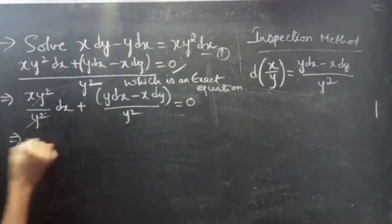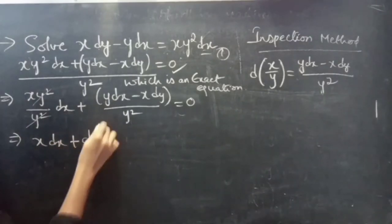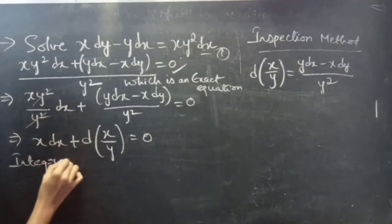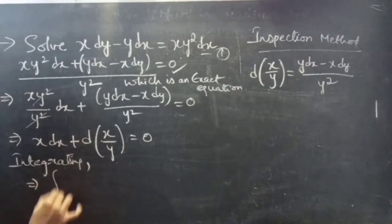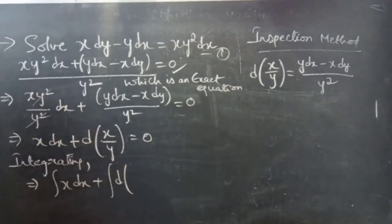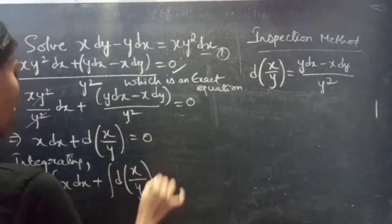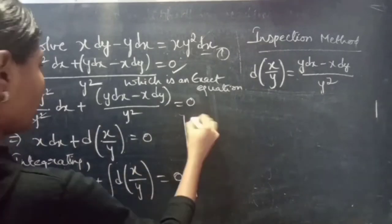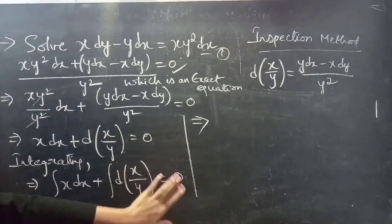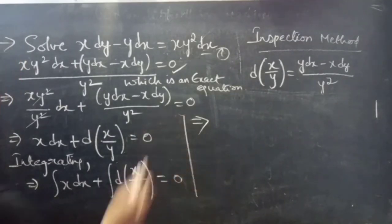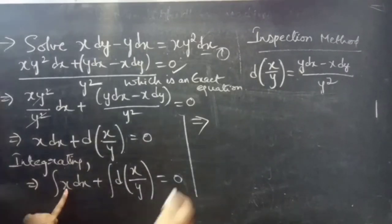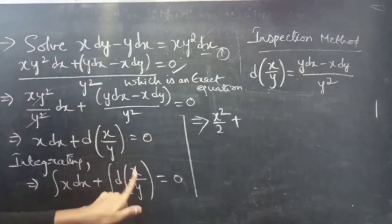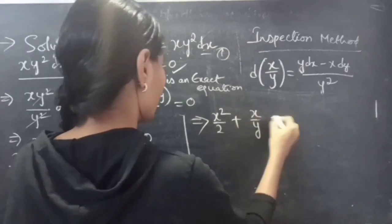Now apply the formula. The equation becomes x dx plus d(x/y) equals to 0. Integrating both sides: the integral of x dx plus the integral of d(x/y) equals c. The integral of x dx is x squared / 2, and the integral of d(x/y) is x/y. So we get x squared / 2 plus x/y equals c.